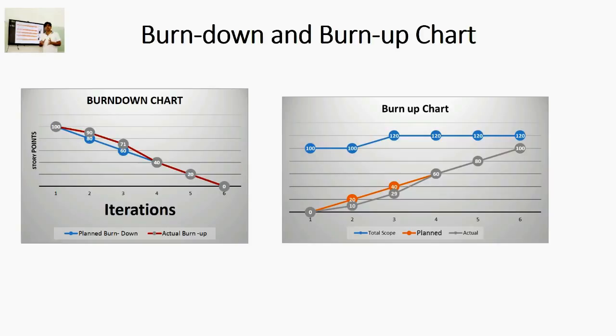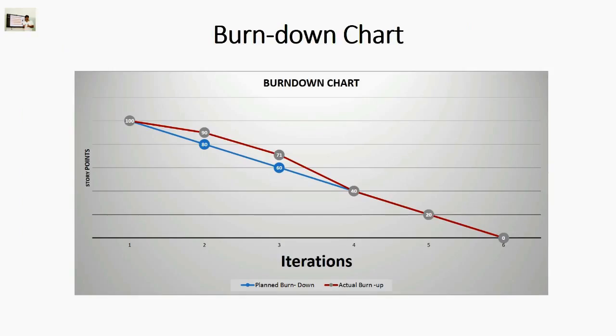Now what you have in front of you right now is a sample burn down chart. If you look at the sample burn down chart carefully, the y-axis represents the scope of project in story points. You can also take story points in man hours. The x-axis represents the number of iterations within a release. In this diagram, the blue line depicts the planned burn down.